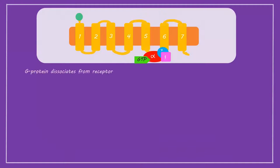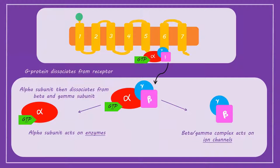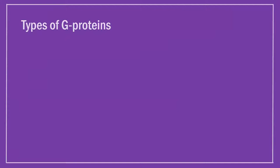Once activated, the G-protein dissociates from the receptor and the alpha subunit separates from the beta and gamma subunits. The alpha subunit tends to go on to act on enzymes involved in the production of second messengers, and the beta-gamma complex may go on to regulate ion channels.